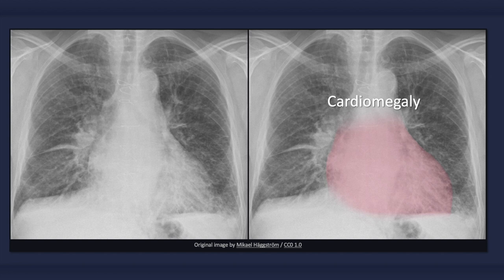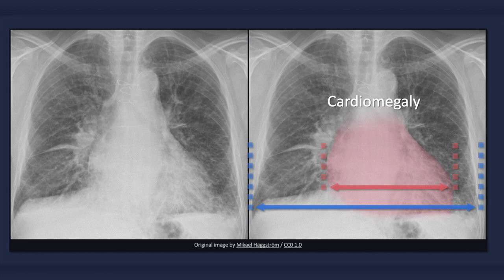Cardiomegaly, particularly in concert with other findings, is a suggestive feature of congestive heart failure. However, keep in mind that congestive heart failure can occur in the presence of a normal-sized heart. Cardiomegaly is said to be present when the cardiothoracic ratio is greater than 0.5 — that is, when the largest transverse distance between the left and right heart borders is greater than half the width of the thorax.